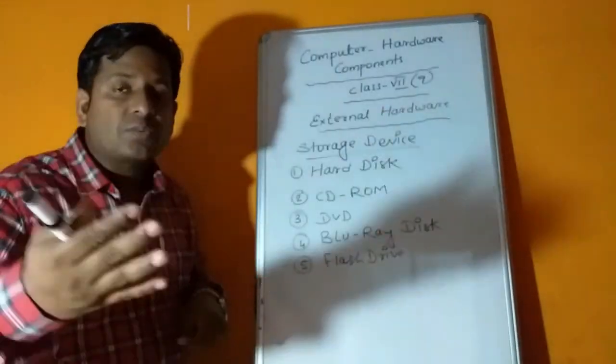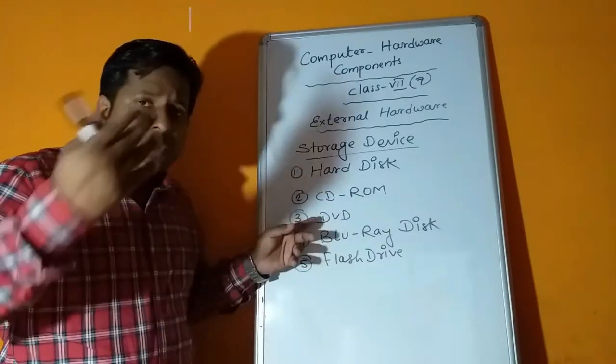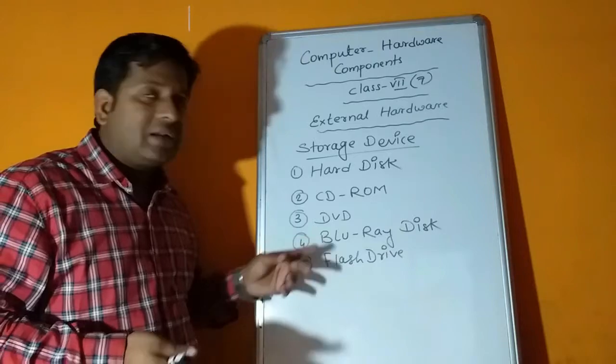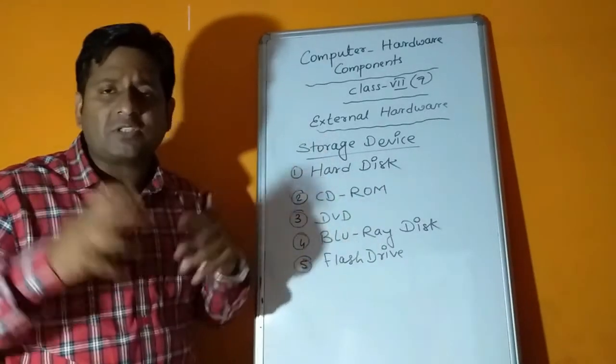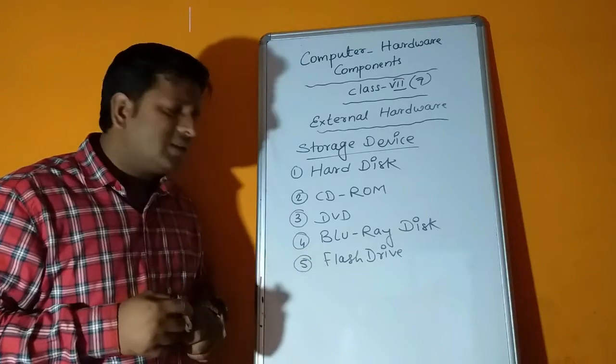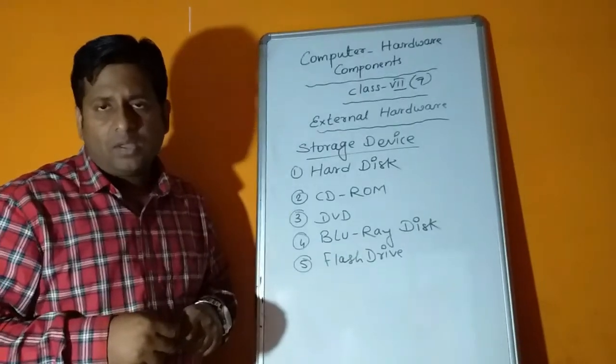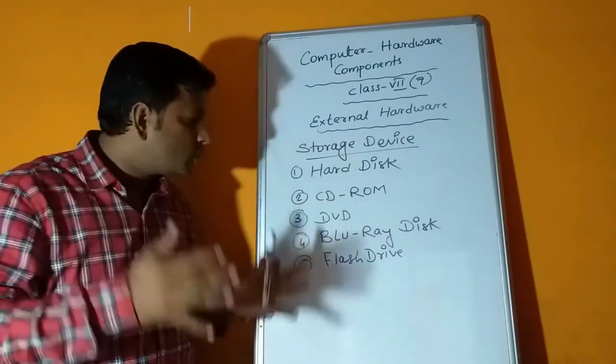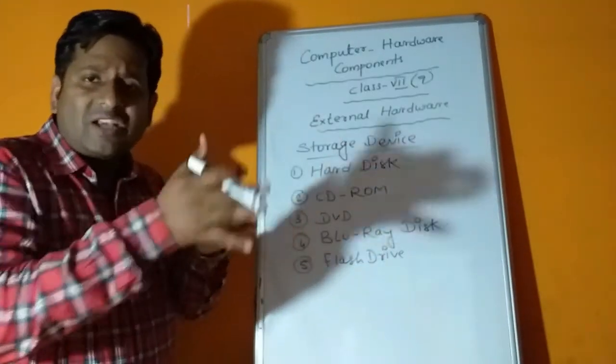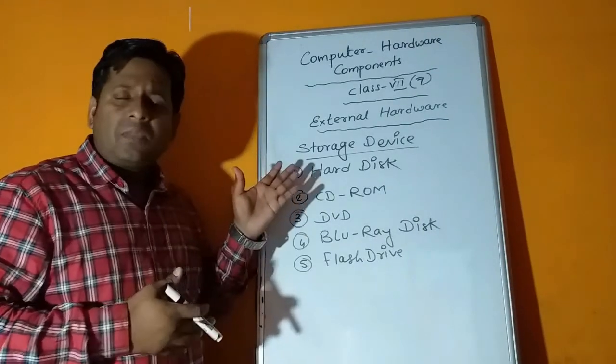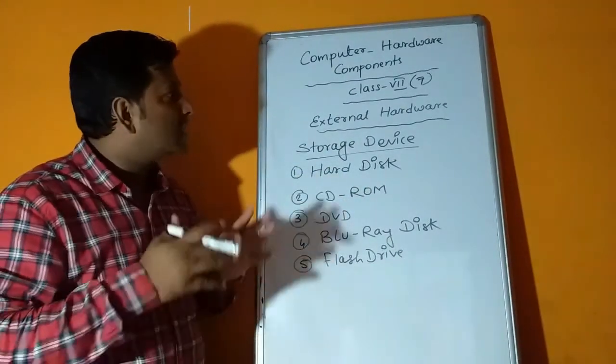With even more capacity, around 25 gigabytes, is Blu-ray disc. It looks the same but is used for HD videos, high definition videos because they have large capacity. Fifth part is flash drive, the pen drive. Smaller devices, even memory cards come in flash drives. They are of small size with high capacity and are also storage devices. These devices help us store data and carry from one place to another. This is all about computer hardware components.